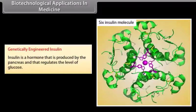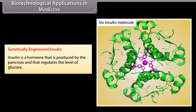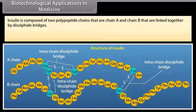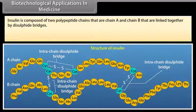Biotechnological applications in medicine. Genetically engineered insulin. Insulin is a hormone produced by the pancreas that regulates the level of glucose. Insulin is composed of two polypeptide chains — chain A and chain B — that are linked together by disulphide bridges.